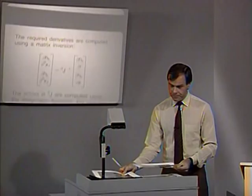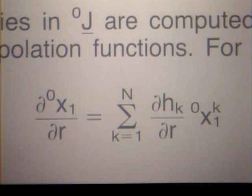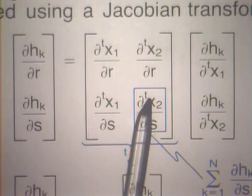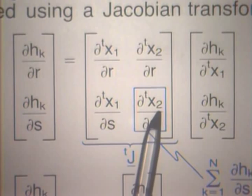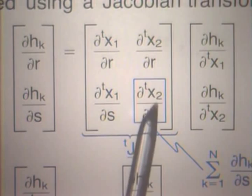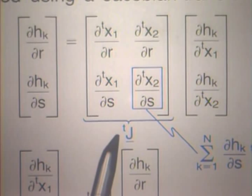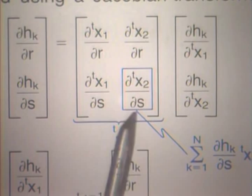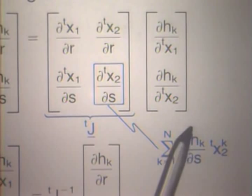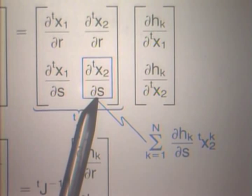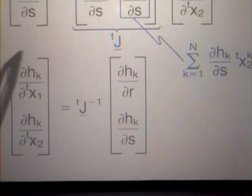If we want to take derivatives with respect to the current coordinates, we proceed in the same way by substituting the txi coordinates instead of the 0xi coordinates into the Jacobian matrix. The resulting Jacobian matrix gives derivatives of the current coordinates at time t with respect to the natural coordinates. Each element is obtained using the differentiation of the interpolation functions with respect to the natural coordinates, multiplied by the known nodal point coordinates at time t. We invert this relationship to obtain the needed differentiations.